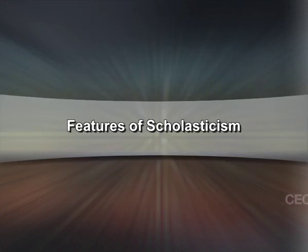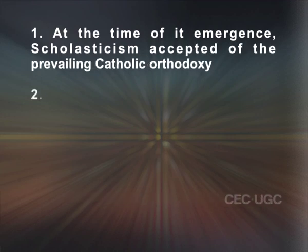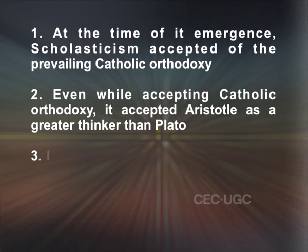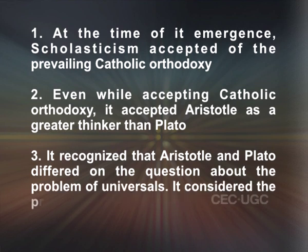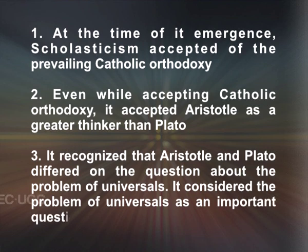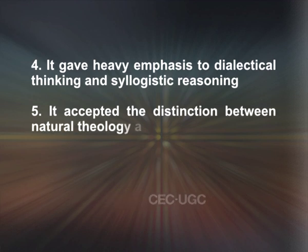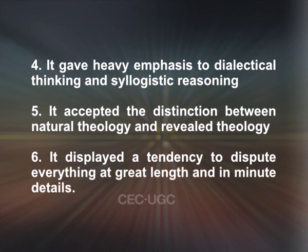Features of scholasticism. It is possible to identify six broad characteristics of scholasticism. At the time of its emergence, scholasticism accepted the prevailing Catholic Orthodoxy. Even while accepting Catholic Orthodoxy, it accepted Aristotle as a greater thinker than Plato. It recognized that Aristotle and Plato differed on the question of the problem of universals, and it considered the problem of universals as an important question to be resolved. It gave heavy emphasis to dialectical thinking and syllogistic reasoning. It accepted the distinction between natural theology and revealed theology, and displayed a tendency to dispute everything at great length and in minute details.